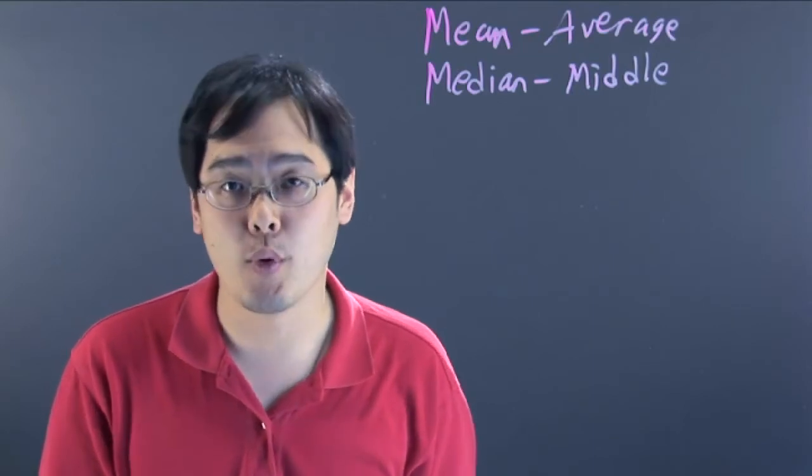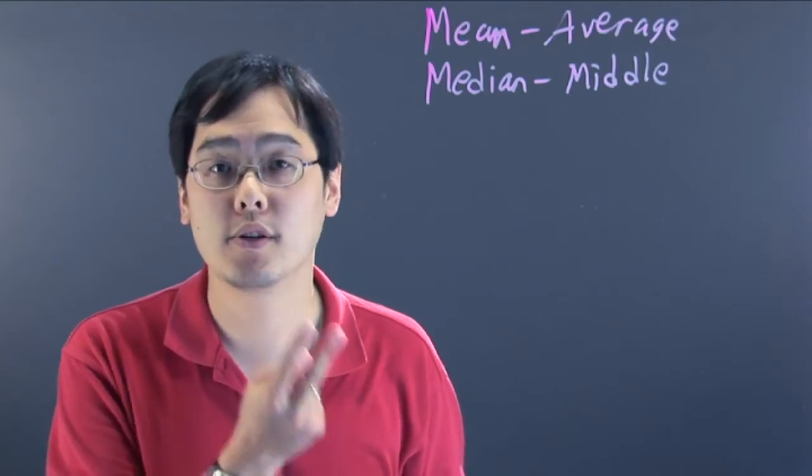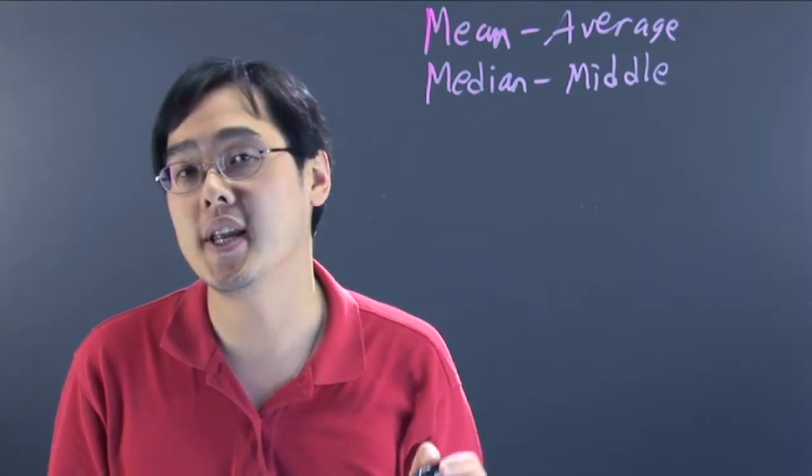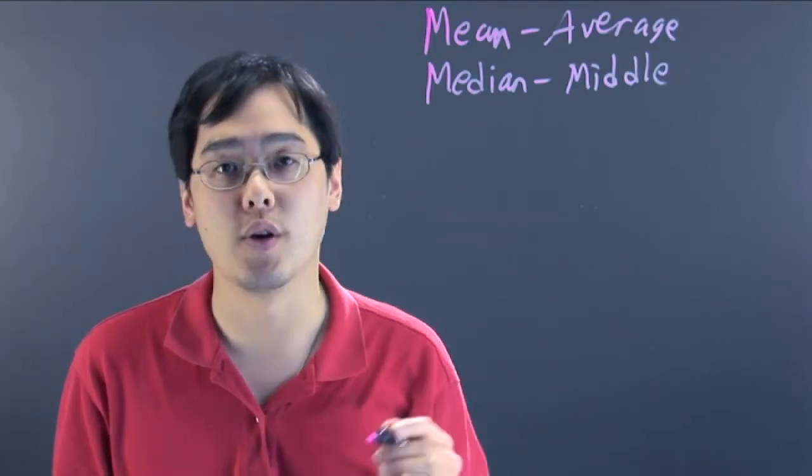If you have an even number of points, you have to take the middle two values and then divide by two. But in order to find the median you have to arrange your numbers from lowest to highest first.